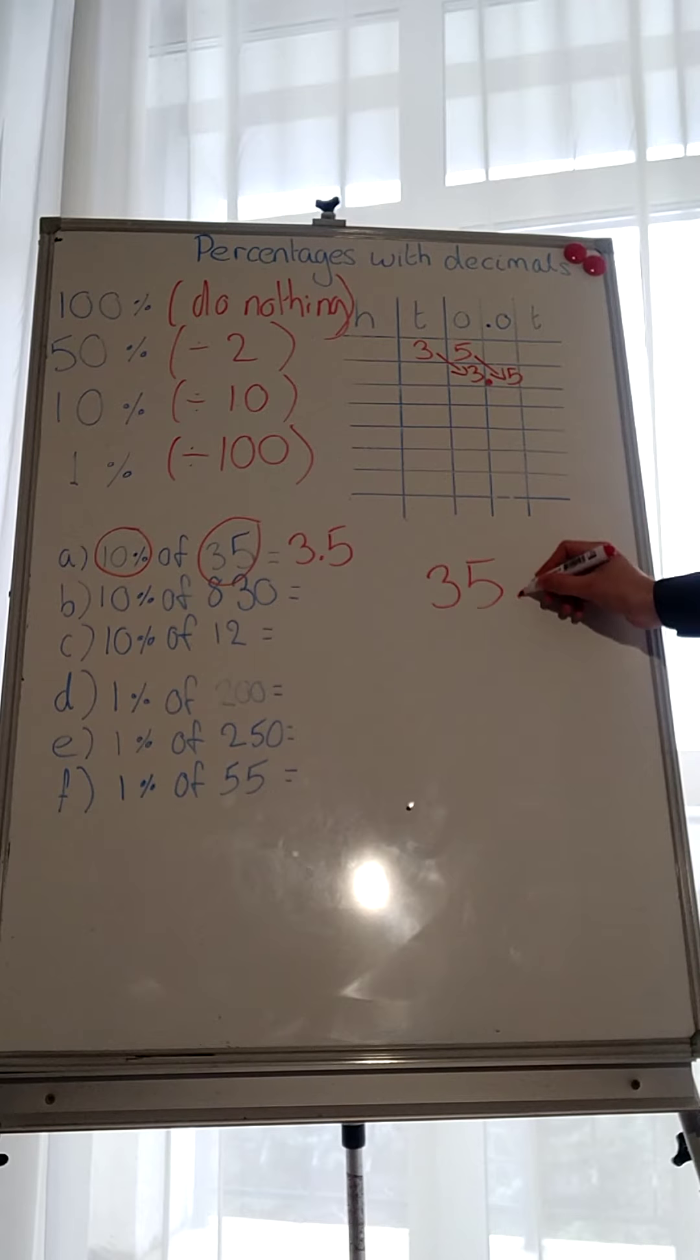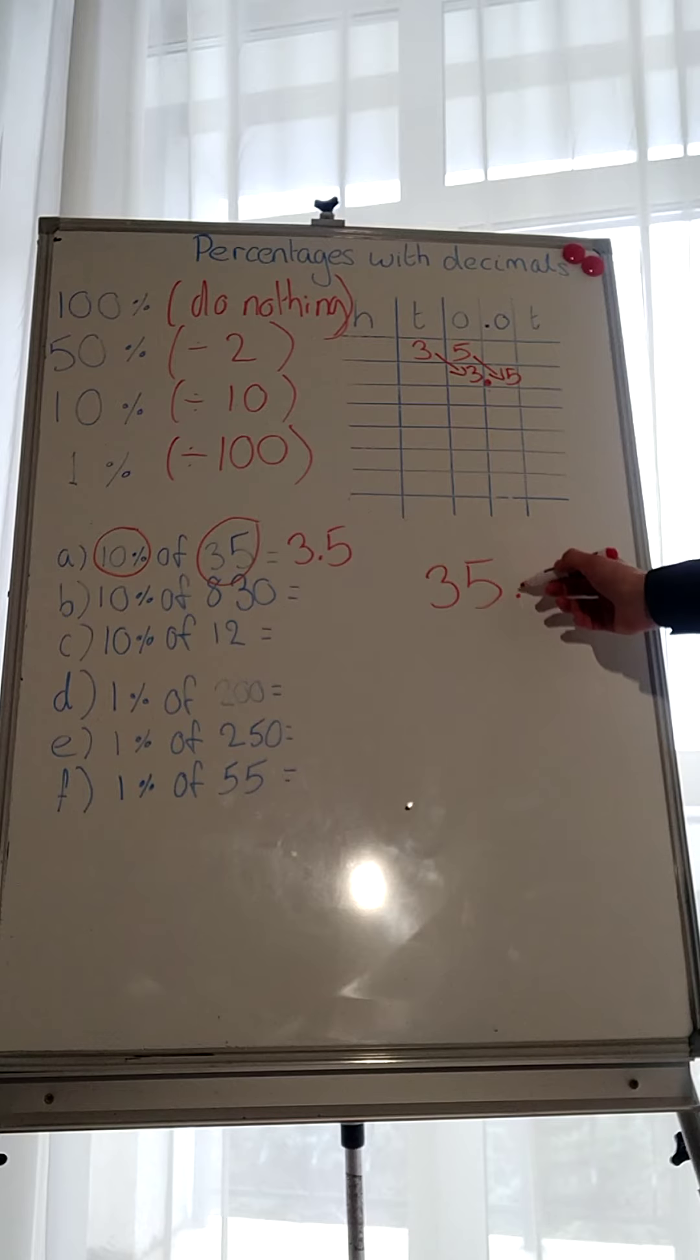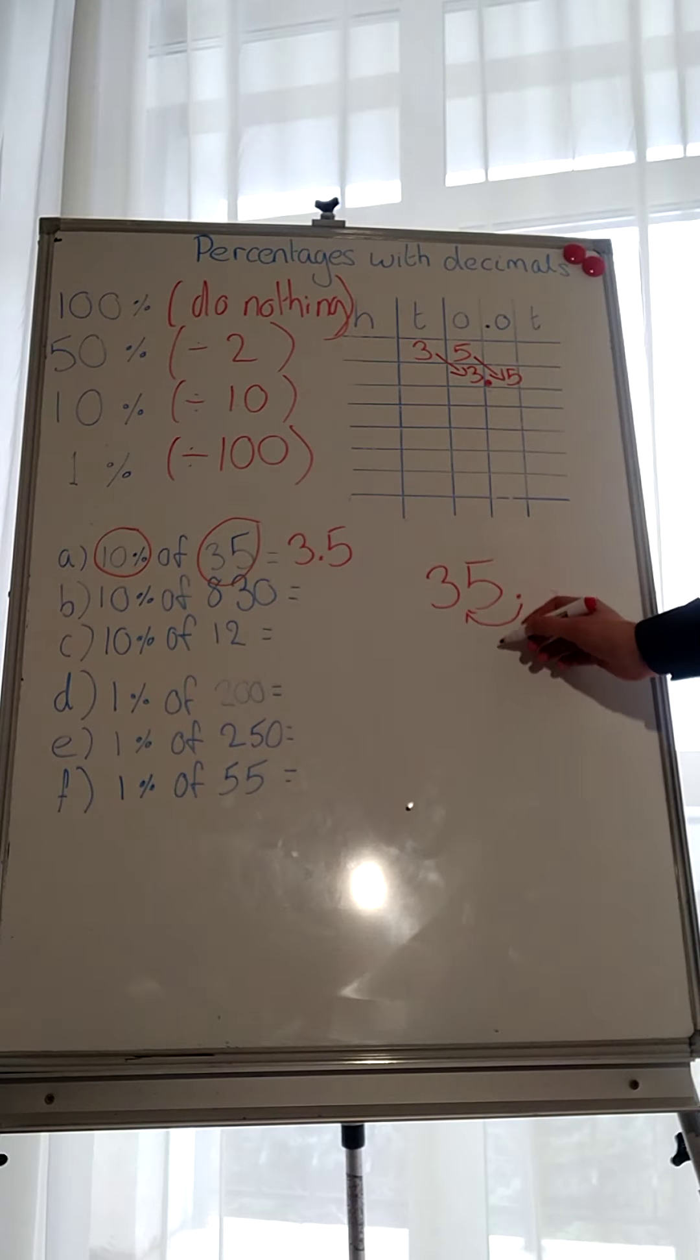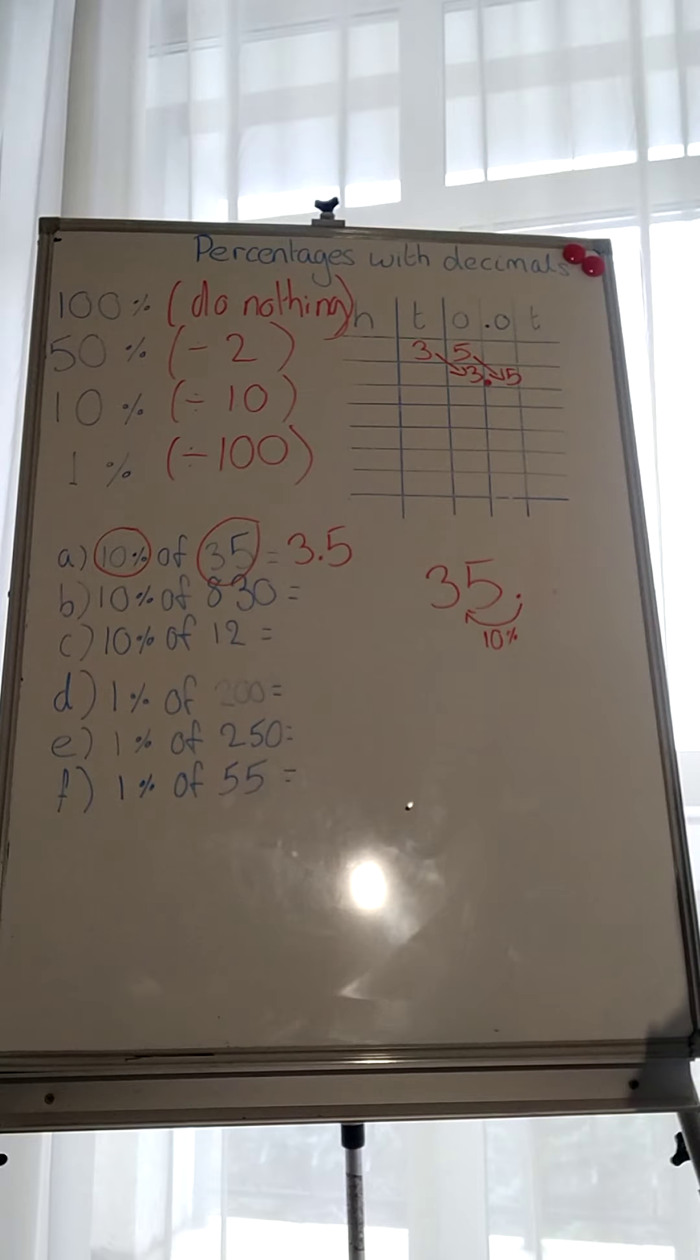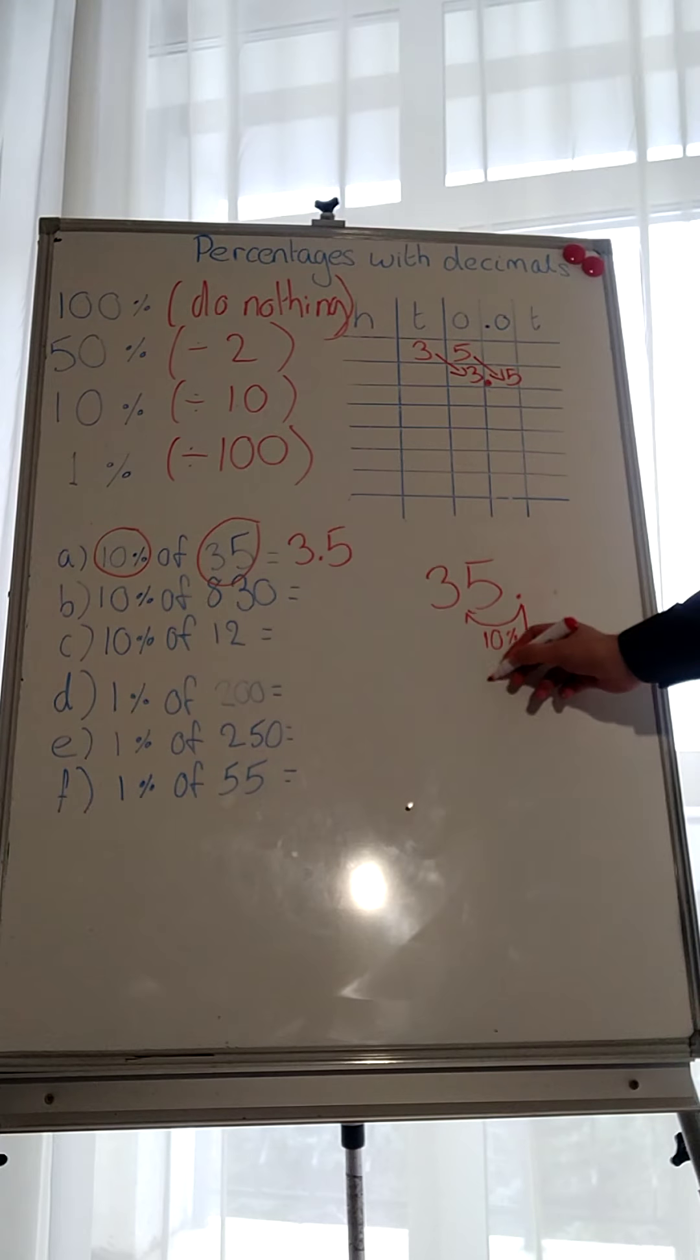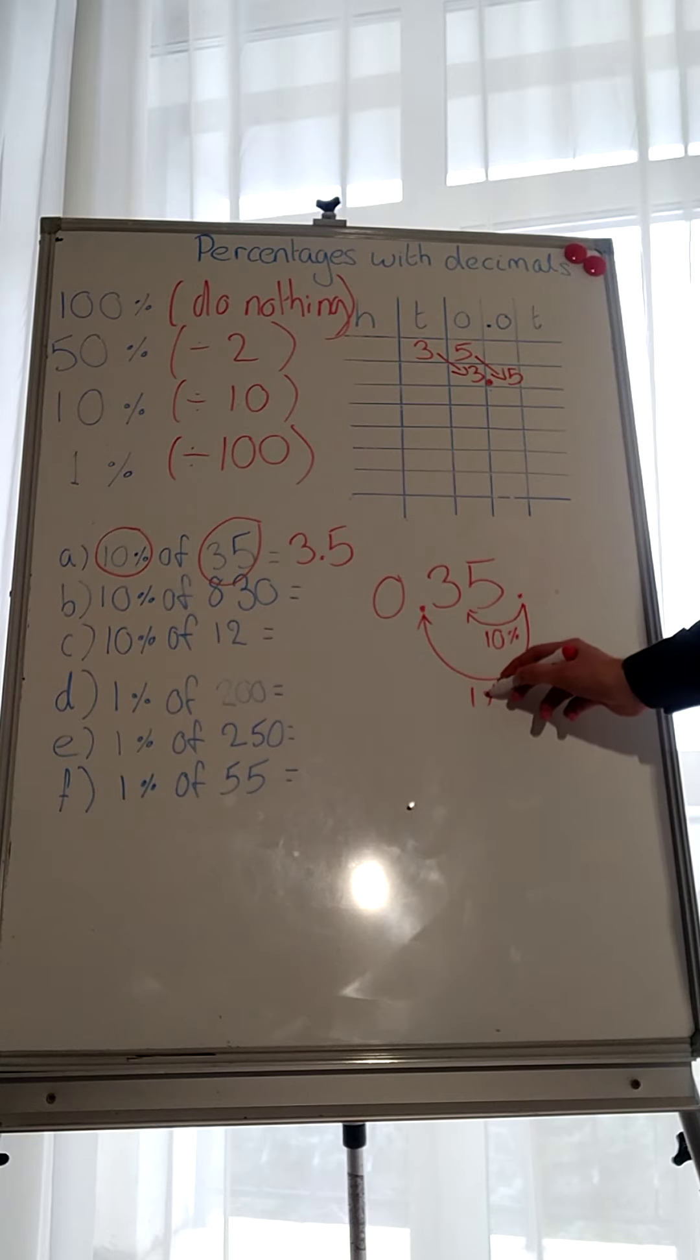Another way of looking at it is write 35 here. Here we have the whole number. So we don't need the points, don't need the decimal because it's already a whole number. But if we were to write it, it would be here. Now, when we divide it by 10, we want 10%. All we need to do is move the decimal one place to the left. This is for 10%.